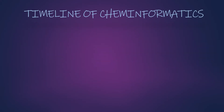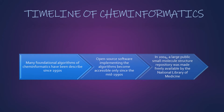How did ChemInformatics start? At the beginning, many foundational algorithms of ChemInformatics have been described since the 1950s. But open-source software implementing the algorithms became accessible only since the mid-1990s, which is around 40 years later. In 2004, a large public small molecule structure repository was made freely available by the National Library of Medicine.